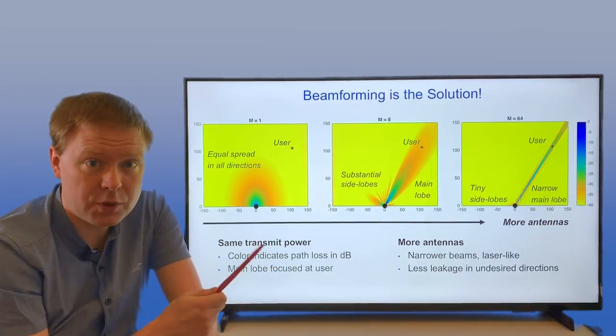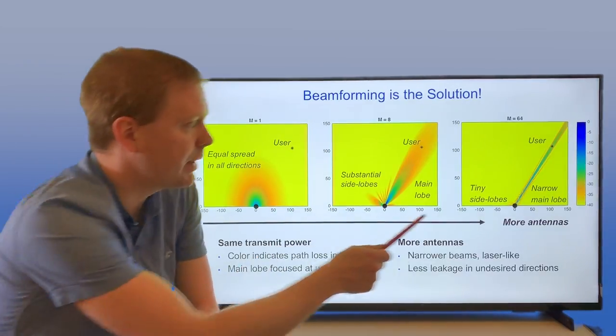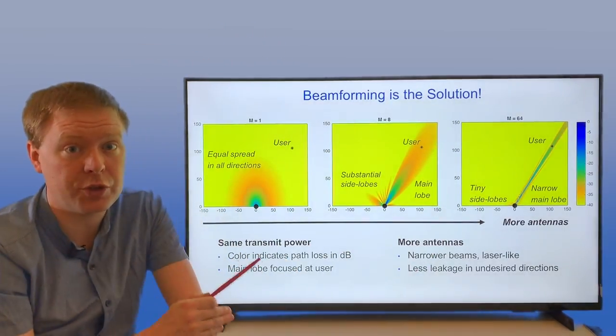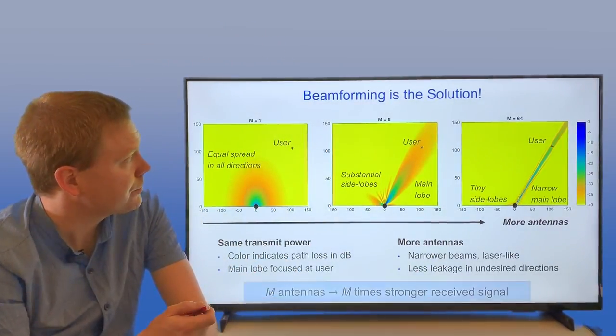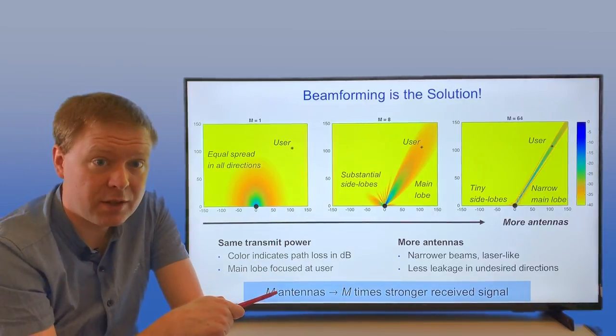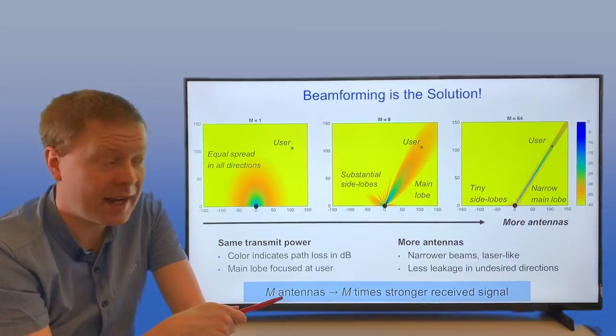The good thing with focusing power in a particular direction is also that there's less interference sent in other directions, and that is also utilized in Massive MIMO. So M antennas leads to an M times stronger received signal and less interference in other locations.